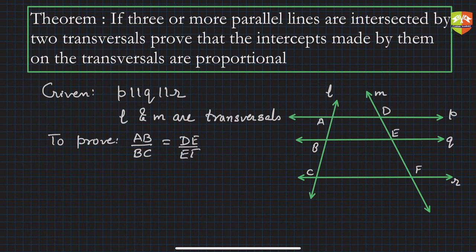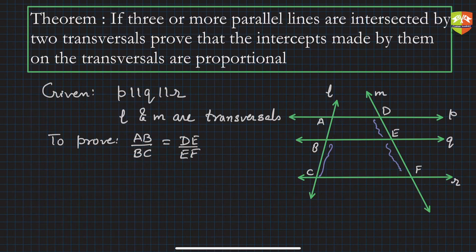This is also called the intercept theorem. I have shown only three lines, but you can go for four or five parallel lines. An intercept is the segment cut off on the transversal between the parallel lines — these are all intercepts. These intercepts are proportional, and that's what we need to prove.